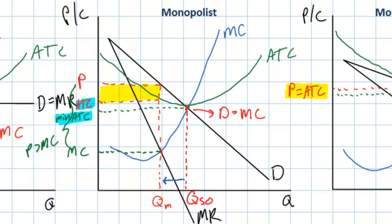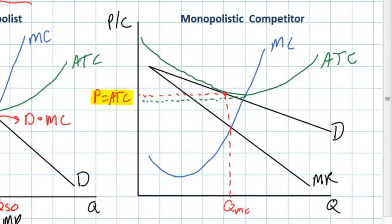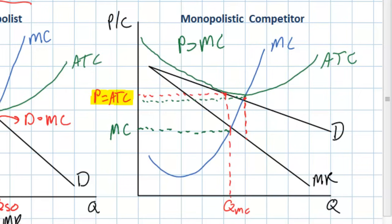Not enough of a monopolist's output is produced relative to what is socially optimal. For monopolistic competition, the price is also greater than marginal cost — the same reason applies. As long as firms have price-making power and face a downward-sloping demand curve, they will choose to produce at a quantity less than where marginal benefit equals marginal cost. They restrict output in order to maximize their profits.